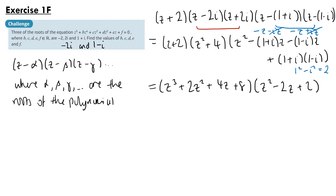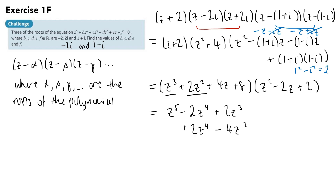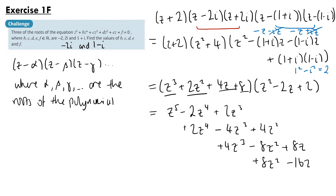Expanding the first bracket (z plus 2)(z squared plus 4) gives z cubed plus 2z squared plus 4z plus 8. Now our final step is to expand (z cubed plus 2z squared plus 4z plus 8)(z squared minus 2z plus 2). Multiplying by z cubed gives z to the power 5 minus 2z to the power 4 plus 2z cubed. Multiplying by 2z squared gives plus 2z to the power 4 minus 4z cubed plus 4z squared. Multiplying by 4z gives plus 4z cubed minus 8z squared plus 8z.